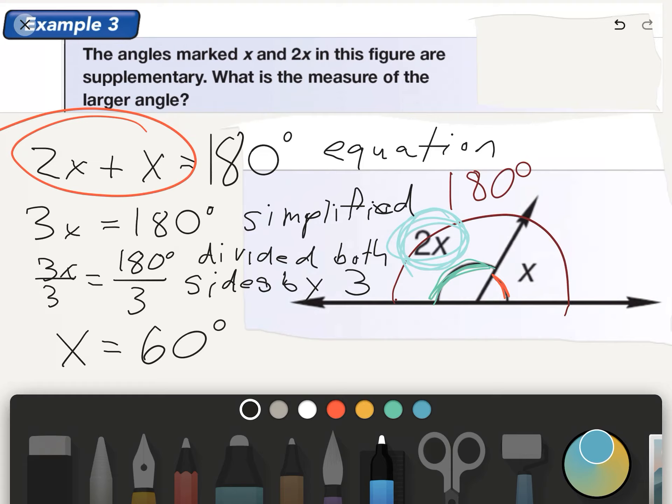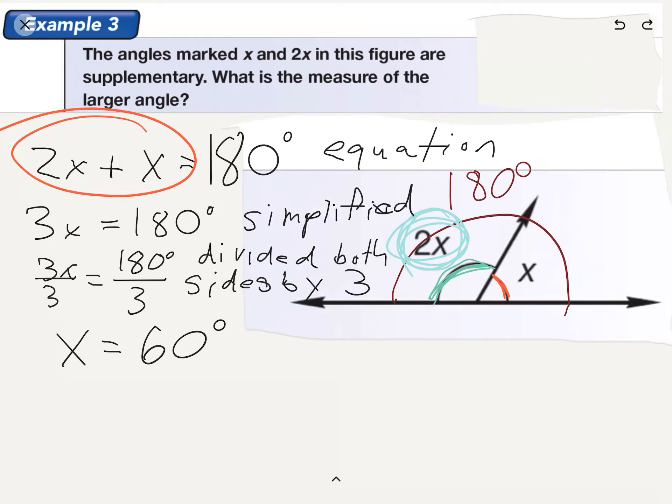However, the solution to the equation is 60 degrees. However, that's not the answer to the question. The question was 2x. So we can just take this one step further here and say that 2x equals 120. So our final step was we multiplied both sides by 2.